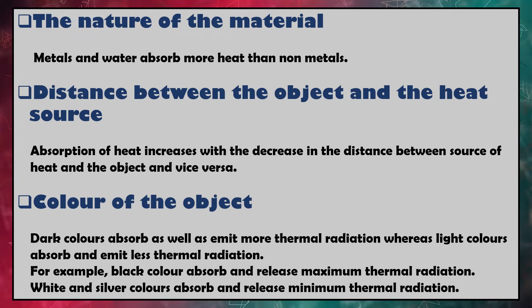The absorption of heat also depends upon the color of the object. Dark colors absorb as well as emit more thermal radiation, whereas light colors absorb and emit less thermal radiation. For example, black absorbs and releases maximum thermal radiation while white and silver colors absorb and release minimum thermal radiation.